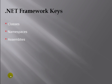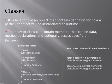Now let's look at the .NET framework keys: classes, namespaces, and assemblies. A class is a blueprint of an object. It contains the definition of how a particular object will be instantiated at runtime — such as properties and methods exposed publicly, and any internal storage structure. A class body can contain methods, data declarations, access specifiers, etc. You can see an example on the screen.